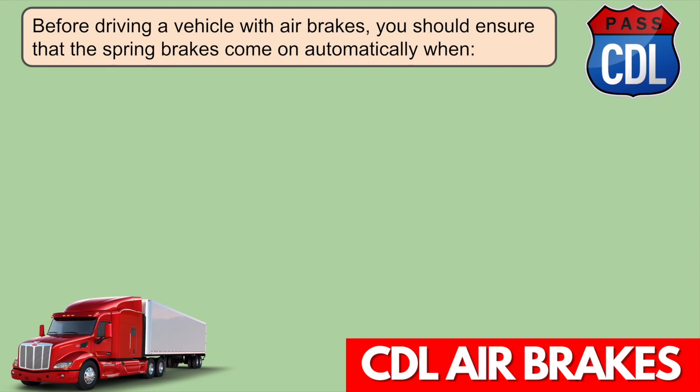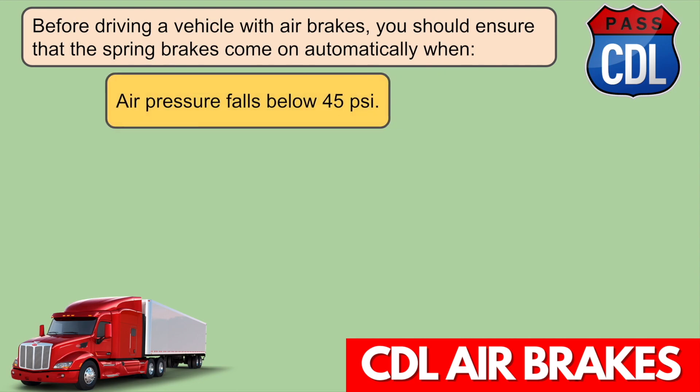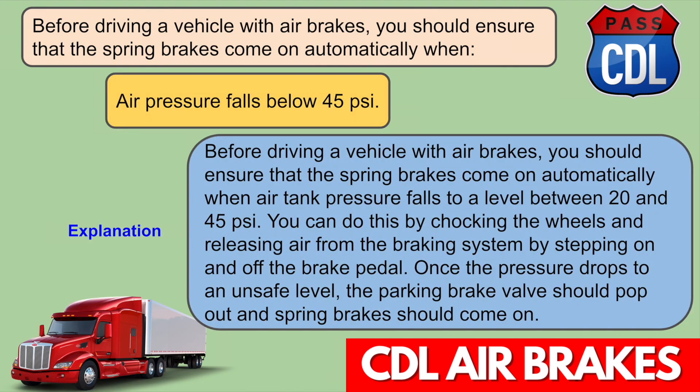Before driving a vehicle with air brakes, you should ensure that the spring brakes come on automatically when air tank pressure falls to a level between 20 and 45 PSI. You can do this by chocking the wheels and releasing air from the braking system by stepping on and off the brake pedal. Once the pressure drops to an unsafe level, the parking brake valve should pop out and spring brakes should come on.